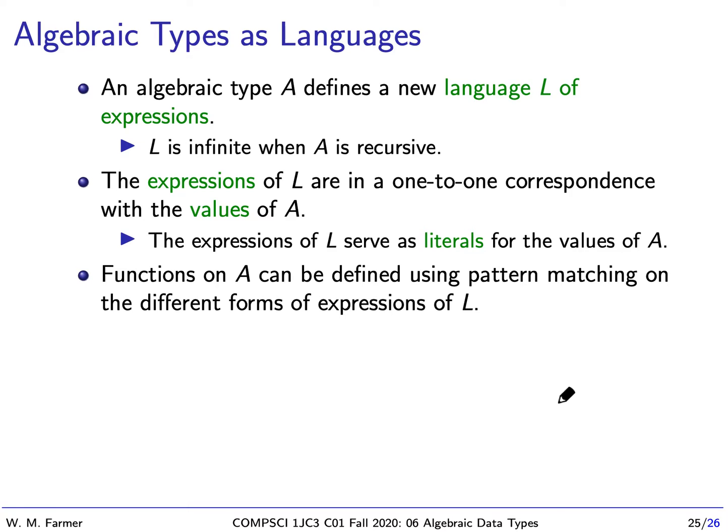Okay, so when we define an algebraic type, we're actually defining a language of expressions. What are the members of the expressions? They're all the things that we can construct using the constructors of the algebraic type. And this language is infinite when the type is recursive. And there's a one-to-one correspondence between these expressions and the values of the type. So these expressions, they denote the values, and every value is denoted by exactly one expression. And we can think of these expressions as literals. They are really literals. They literally tell us what the value of the expression is.